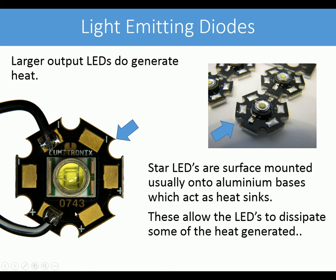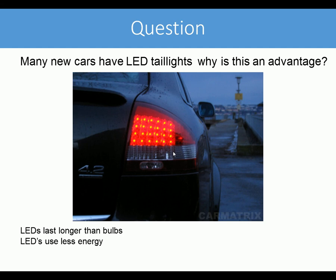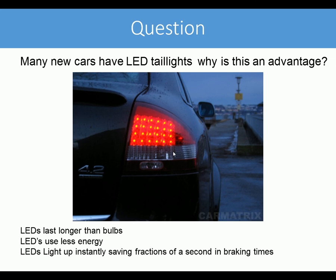Many new cars have LED tail lights. Why is this an advantage? Here's an Audi with LED tail lights. They last longer than light bulbs, they use less energy, and quite importantly they light up instantly, saving a fraction of a second in braking times — so all those are advantages of LEDs.